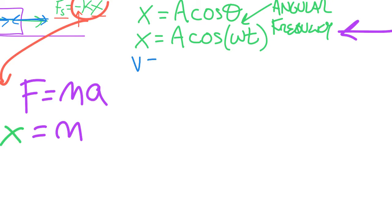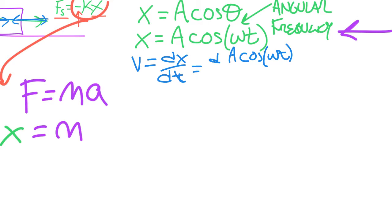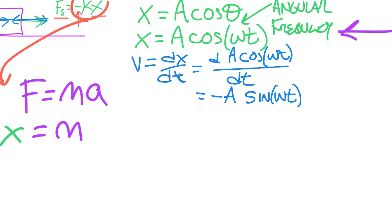Velocity is dx/dt, which is the derivative of A cosine(ωt) with respect to t. The derivative of cosine is minus sine, giving minus A sine(ωt). But because the argument is ωt and not just t, we apply the chain rule and also take the derivative of ωt, which gives us ω. So v = −Aω sine(ωt).